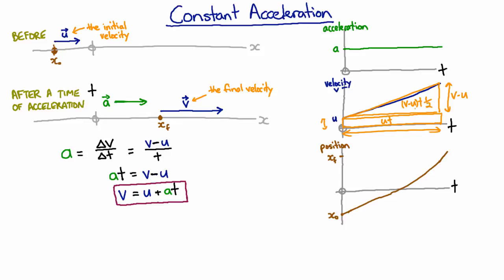So we're going to have to add this area and that area together to get the distance that we travel. So the distance we travel is the final position minus the initial position. And we've just agreed that it's going to be this ut, the area of the rectangle, plus v minus u, t all on 2, which is the area of the triangle.